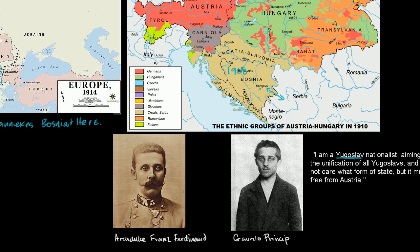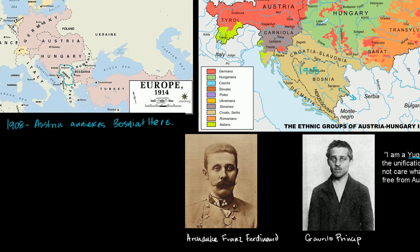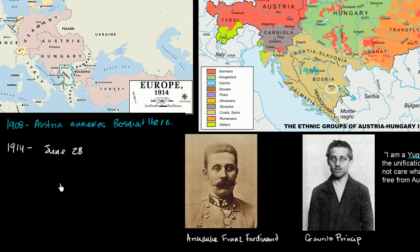And so on June 28th — this is one of those super famous dates in history, and all of what I'm going to describe now happens in 1914 — the rapidity with which it happens speaks to how primed Europe was for war. On June 28th, 1914, Archduke Franz Ferdinand and his wife Sophie visit Sarajevo, right here in Bosnia on this map. Archduke Franz Ferdinand is the nephew of Franz Joseph, the emperor of Austria-Hungary, and he is the heir to the throne.